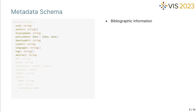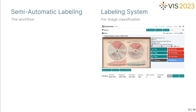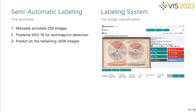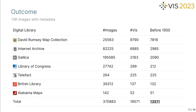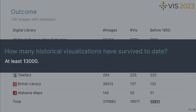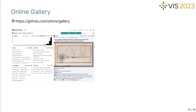For each image, we store its bibliographic information such as author and published date, the image file properties such as MD5 hash, and copyright information such as the copyright status and the data source. Not all the images obtained from the data sources are historical visualizations; in fact, the majority are irrelevant artifacts. Thus, we went through a semi-automatic labeling process. We manually labeled 25,000 images and trained a collection of models to predict the labels of the rest. Then we manually screened the model predictions and corrected errors for quality control. We regard visualizations published before 1950 as historical visualizations. Through this process, we obtained a dataset of 13,000 historical visualization images with corresponding metadata. By now, we have given our preliminary answer to the first question: there are at least 13,000 historical visualizations that have survived to date.